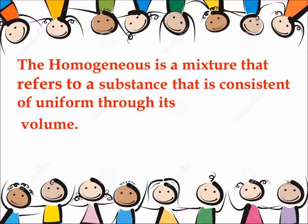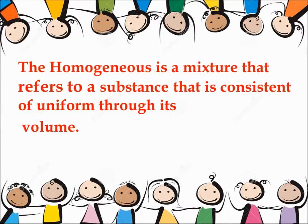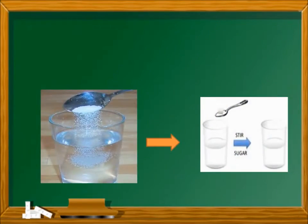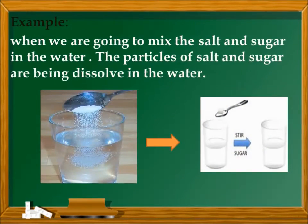A homogeneous mixture refers to a substance that is consistent and uniform throughout its volume. In a homogeneous mixture, you can't see the difference between parts of the matter — it all looks uniform. For example, when we mix salt and sugar in water, the particles of salt and sugar are dissolved in the water.